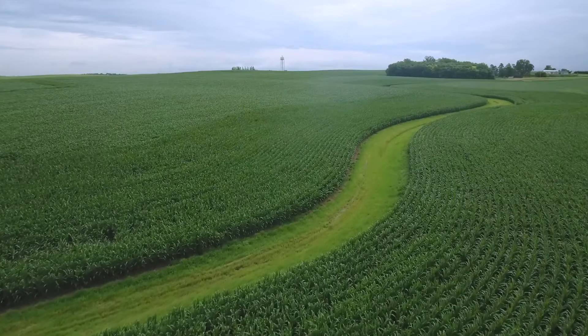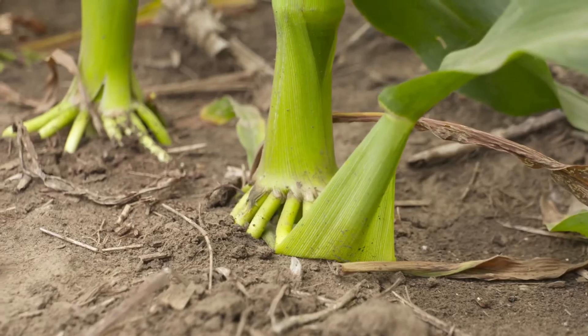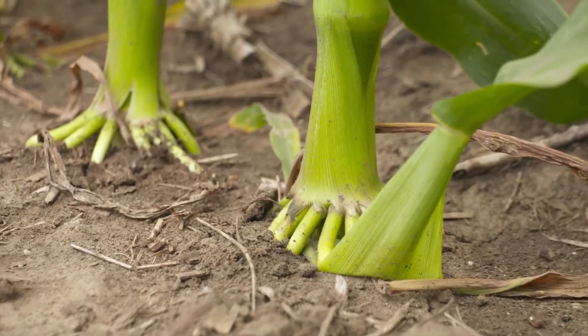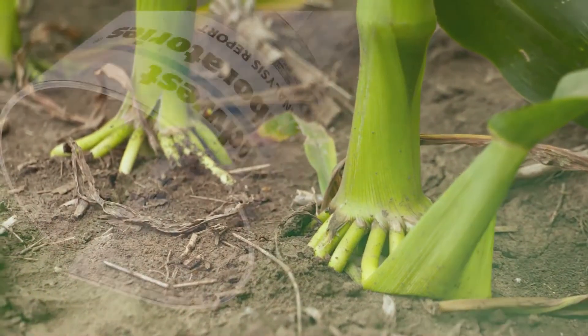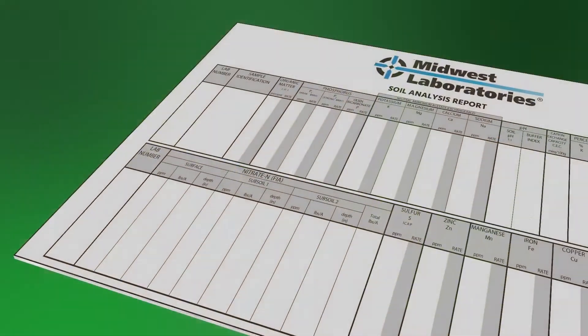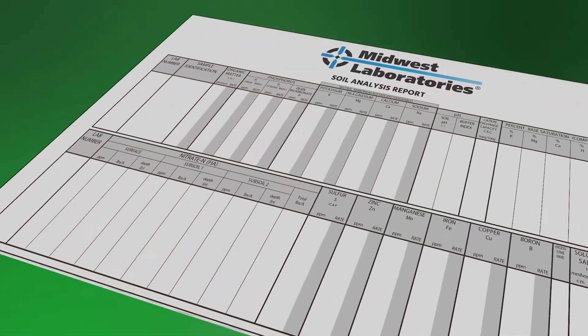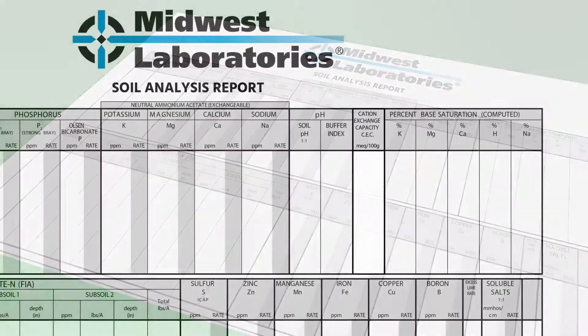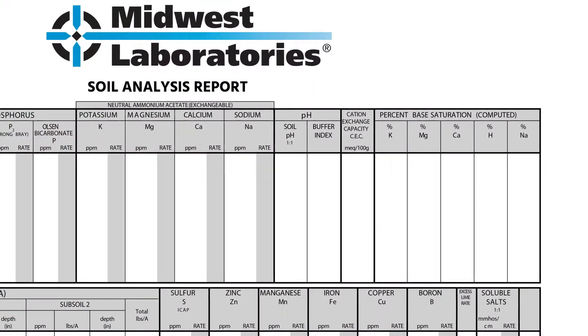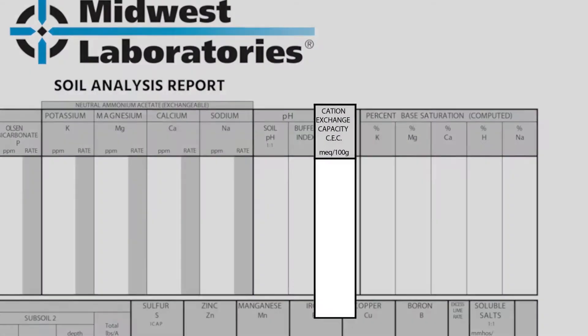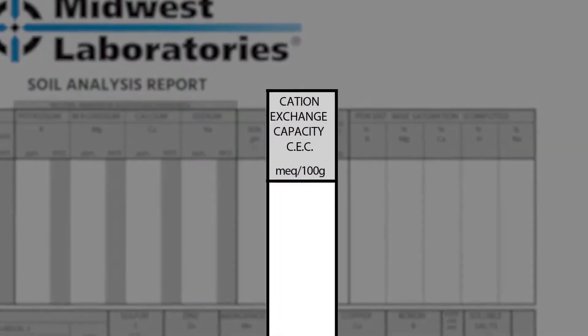To achieve high yields, it's important to understand your soil's capacity to hold nutrients, and this characteristic is highly influenced by cation exchange capacity, or CEC.